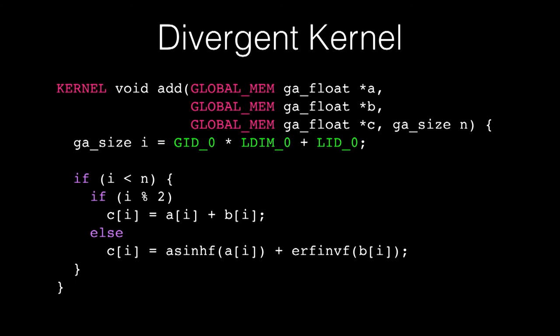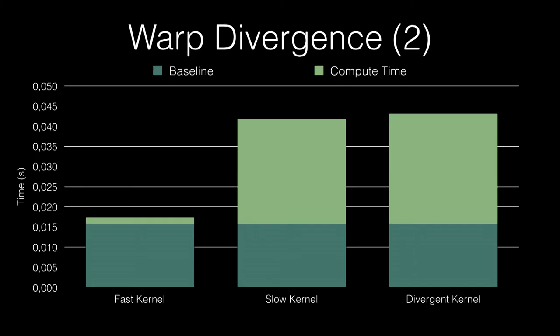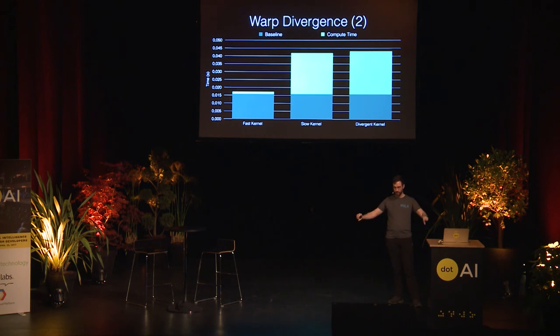Here is an example of a divergent kernel with timing results. For each index in a vector, it's either doing a simple addition or doing a more complex function that takes more time. The fast kernel does the addition all the time, the slow kernel does the more complex code all the time, and the divergent kernel alternates between the two. The divergent kernel takes as much time as the slow plus the fast kernel combined, because it's executing all the instructions in all branches.